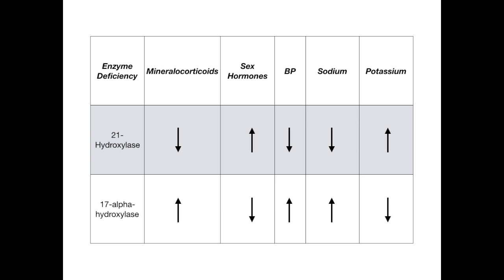So that's it, guys. If you use this Dirty Medicine mnemonic and just look at the numbers — 21 versus 17 — you can figure out everything you need to know based on the fact that the 21-year-old is happy because he's in college, and the 17-year-old is a salty little high schooler. I know it's stupid and I went through it fast, but if you know this story, you're not going to get the questions wrong that want you to differentiate between these two. Good luck.